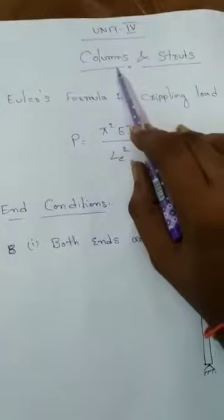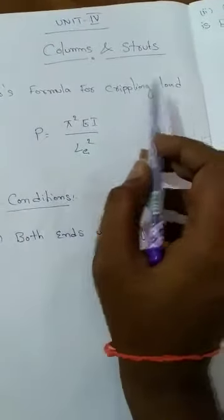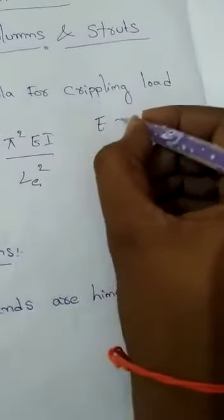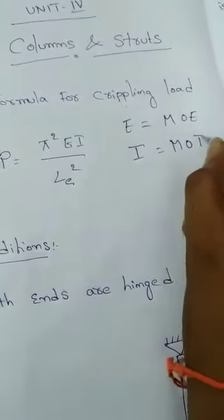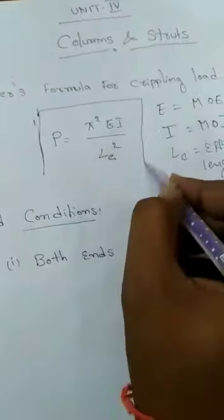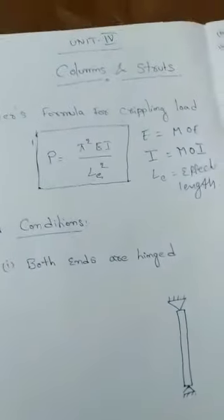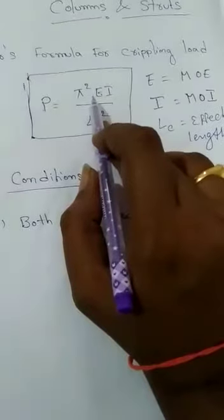Here I will discuss Euler's formula for crippling load. The formula is P = π²EI / LE², which is used for calculating the crippling load in a column member. Here P is the crippling load, E is Young's modulus (modulus of elasticity), I is the moment of inertia, and LE is the effective length of the column. This formula has certain limitations and we will discuss those end conditions.